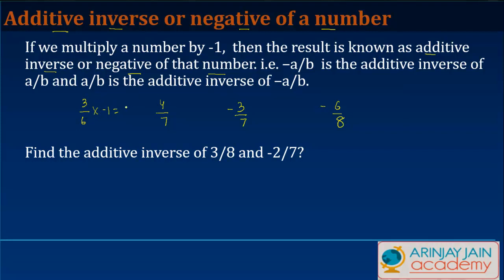When I multiply this by minus 1, I get minus 3 upon 6. So we say minus 3 upon 6 is the additive inverse or negative of 3/6. Similarly, if you multiply this by minus 1, you will get minus 4/7. We say that minus 4/7 is the negative or the additive inverse of 4/7.